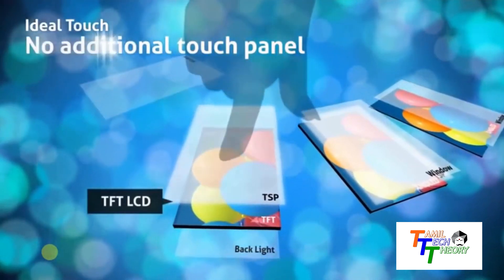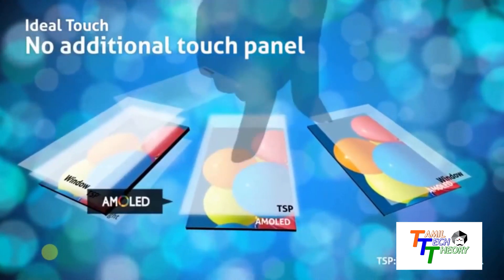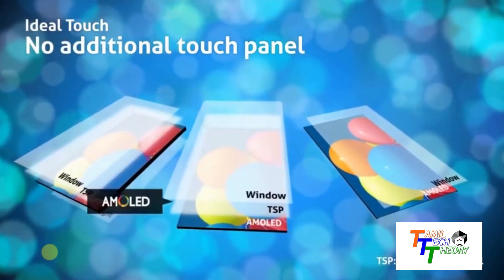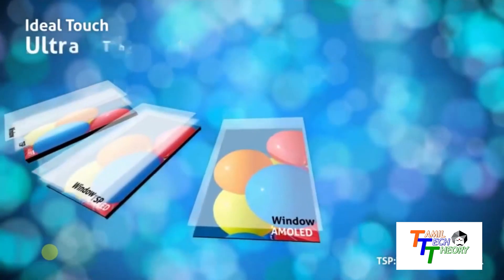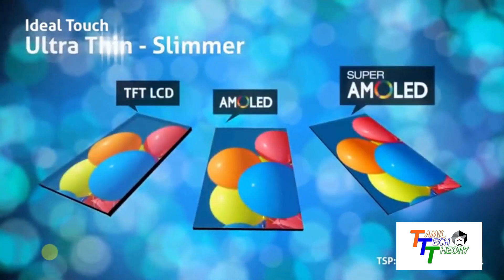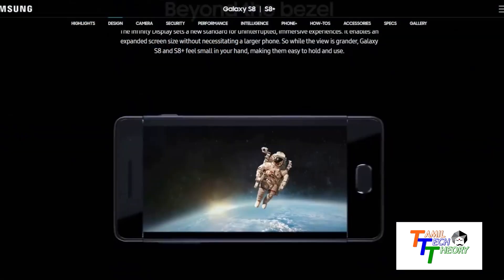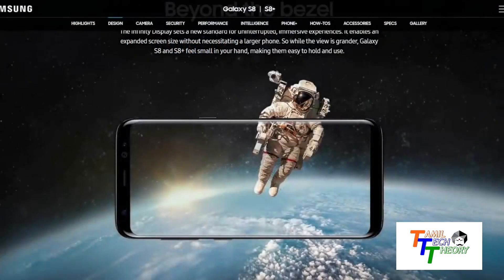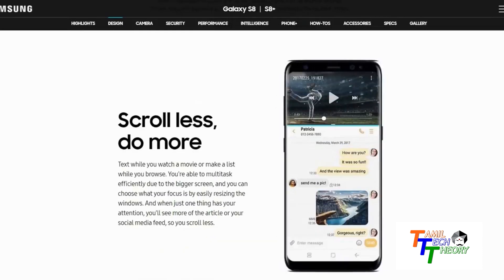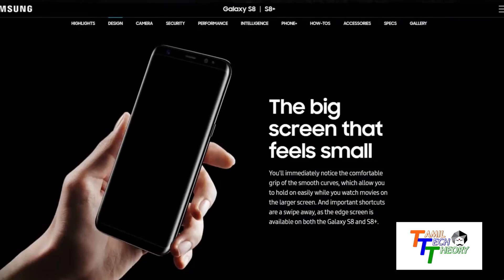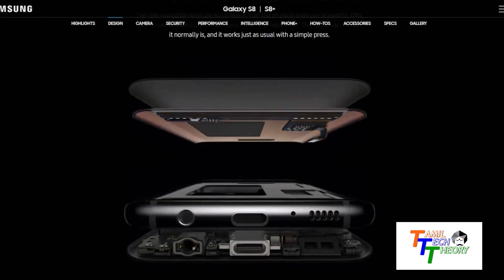Super AMOLED is similar to AMOLED but integrates the touch sensor directly into the display. Without Super AMOLED, the touch sensor is a separate layer on top of the LED. In Super AMOLED, the touch sensor is built into the display itself.